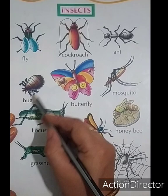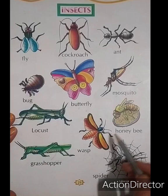Insect: fly, cockroach, ant, bug, butterfly, mosquito.